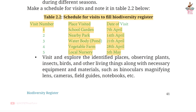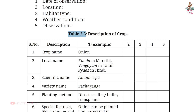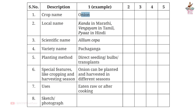Page 43, Table 2.3: Description of crops. First crop: Onion. Local name: Kanda in Marathi, Vengiam in Tamil, Piaz in Hindi. Scientific name: Allium cepa. Variety: Pacha Ganga. Planting method: Direct seeding, bulbs, transplants. Special features: Can be planted and harvested in different seasons. Uses: Eaten raw or after cooking.